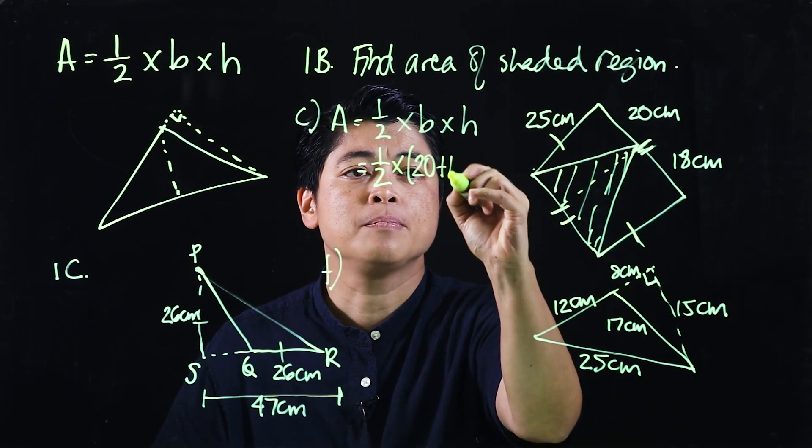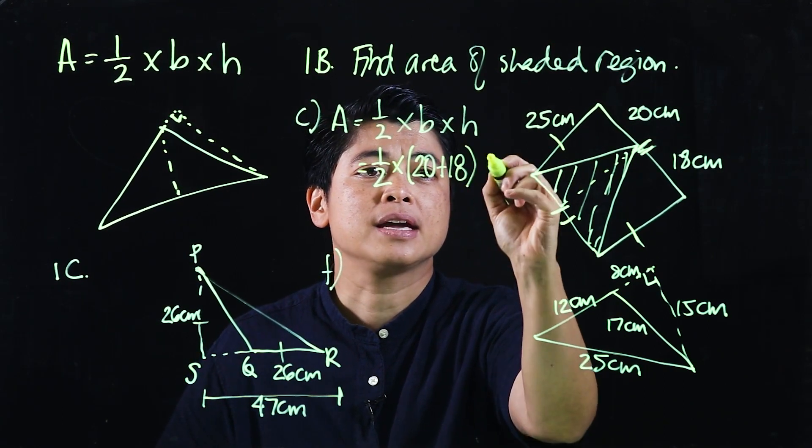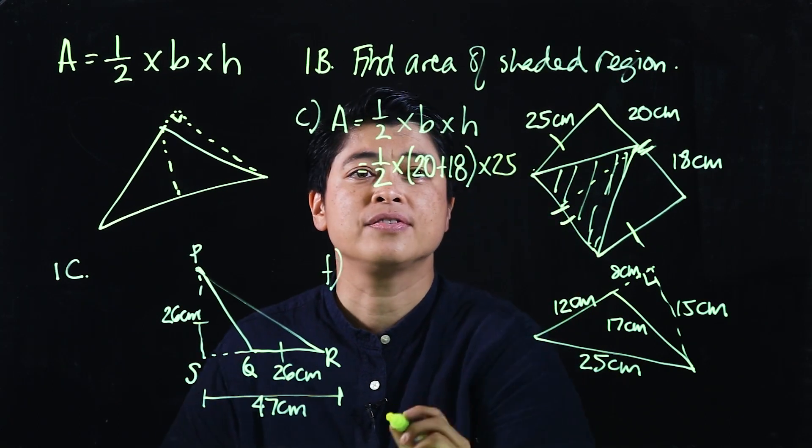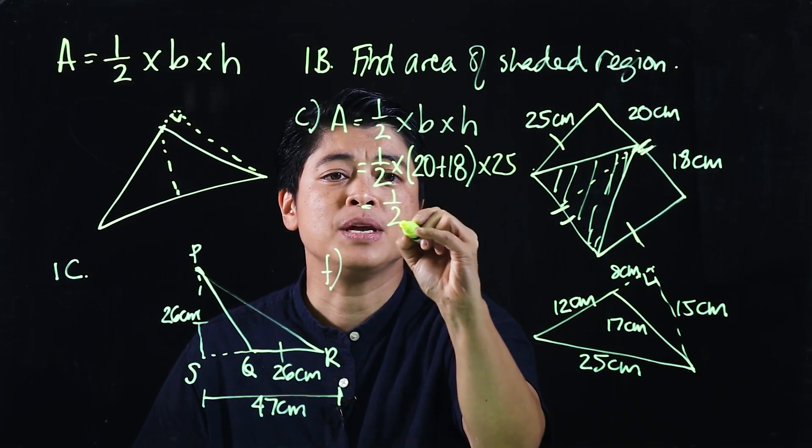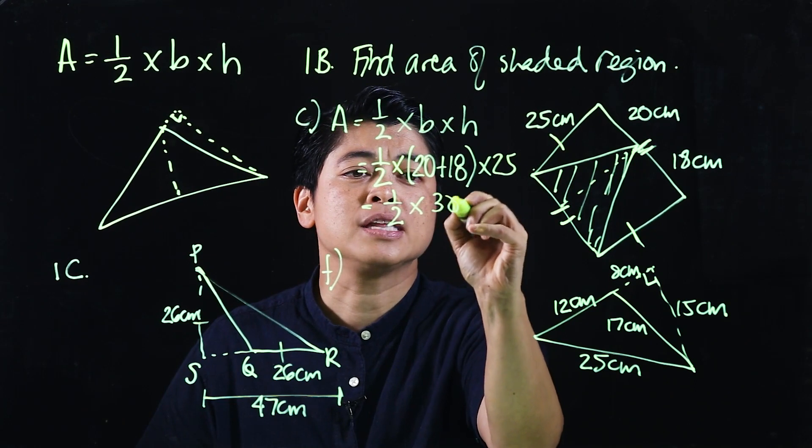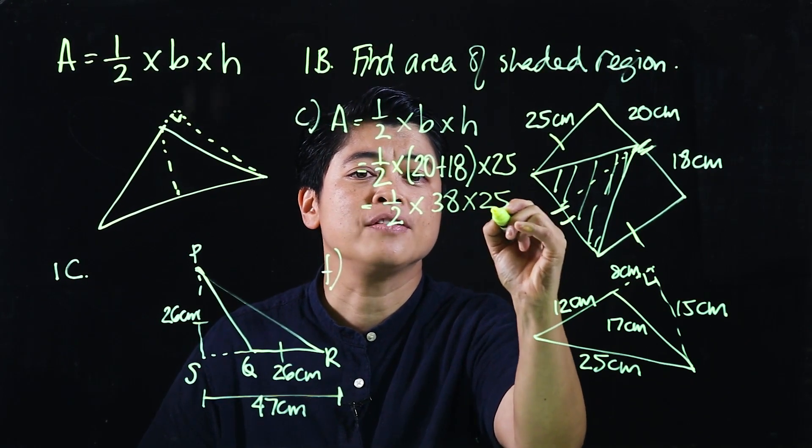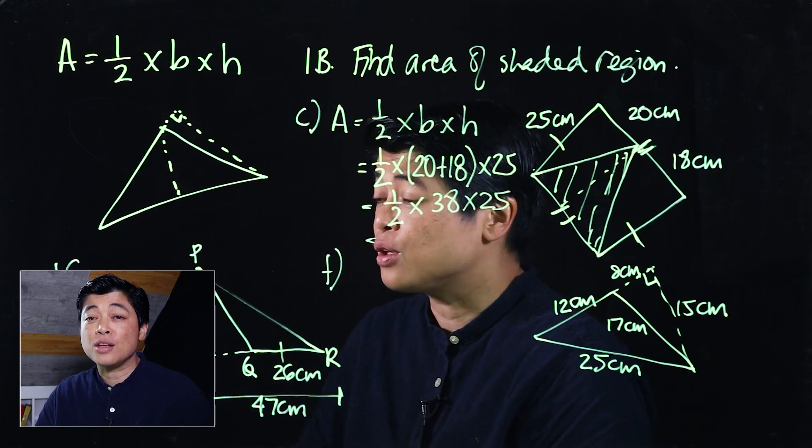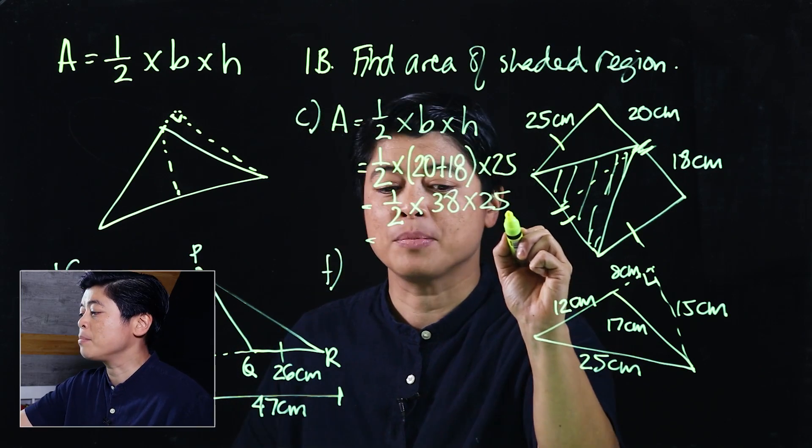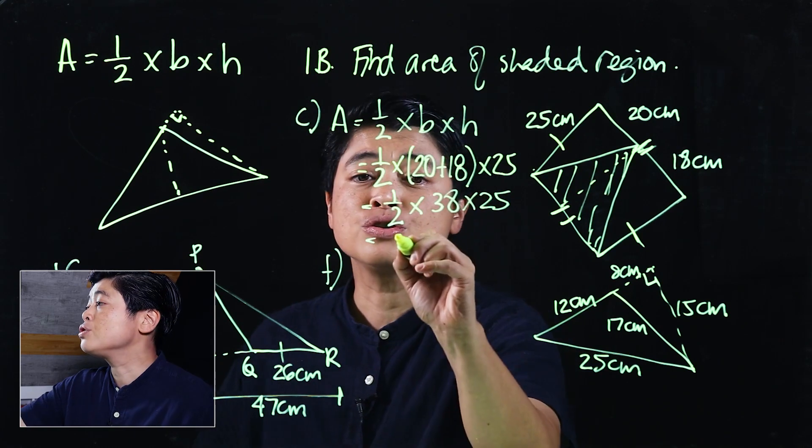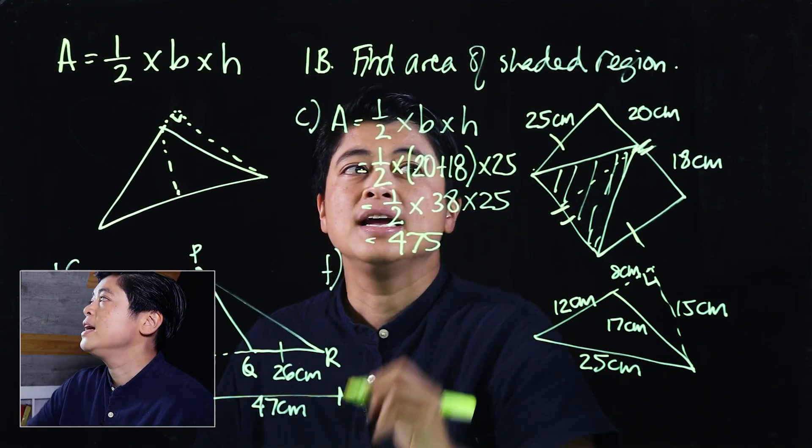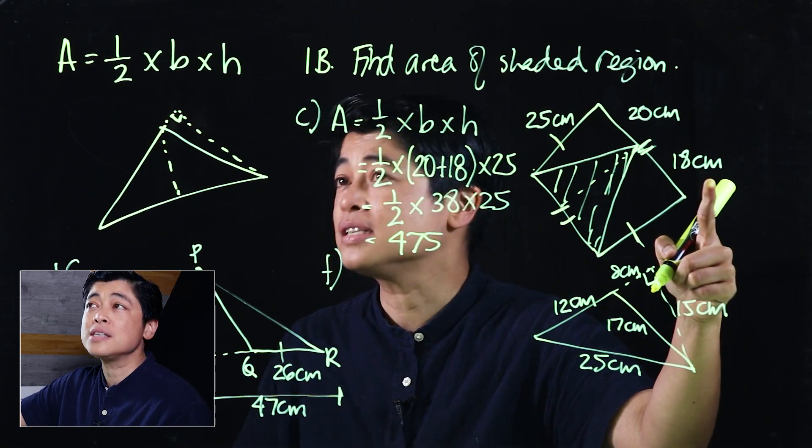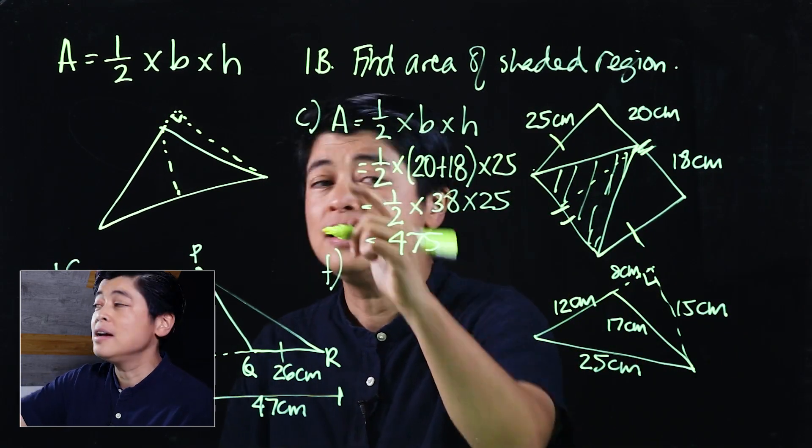20 plus 18, and my height would be this, that would be 25. So which means this will be one half times 38 times 25. Again, assuming that the kids are allowed to use their calculator, if you put those numbers in your calculator, you should get 475.